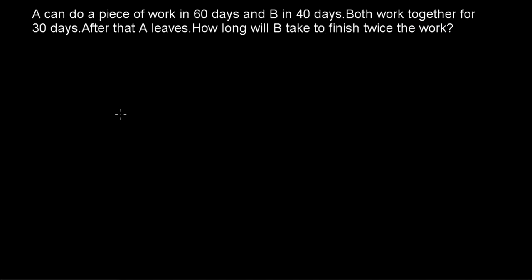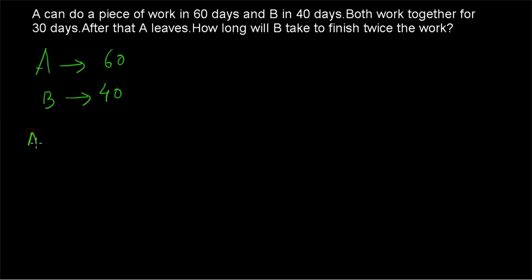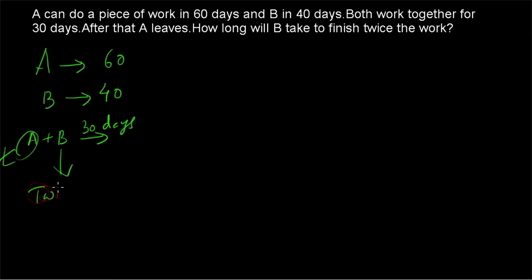Example number 2: A can do a piece of work in 60 days and B in 40 days. Both work together for 30 days, after that A leaves. How long will B take to finish twice the work? A is doing the work in 60 days, B in 40 days, and A and B are working together for 30 days. After that A leaves, and B has to finish twice the work.